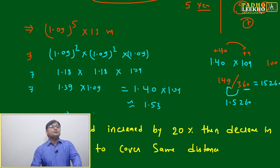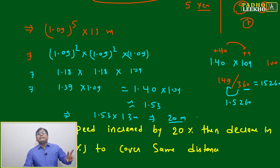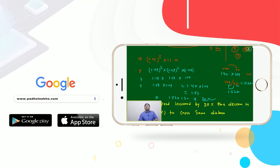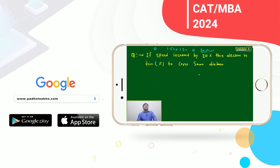To find the users of internet in 2018, calculate 1.53 times 13 million. 150 percent of 13 is 13 plus 6.5, which equals 19.5. But it's 153 percent, so a little more—approximately 20 million. The number of users in 2018 will be 20 million.